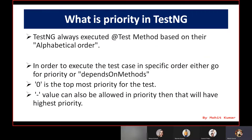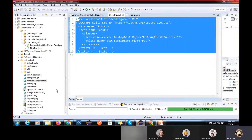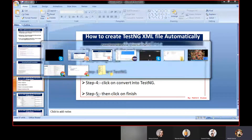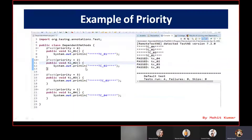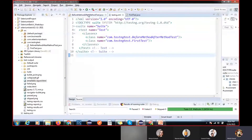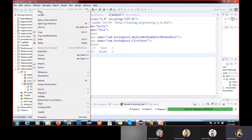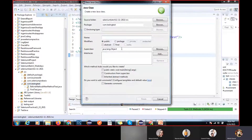TestNG always starts from the @Test method. TestNG executes @Test methods based on their alphabetical order by default. To execute test cases in a specific order, you can use the priority concept or the depends-on concept. Zero is the top-most priority and you can also use minus values. Let me show you how to provide dependency or prioritize TestNG test cases.